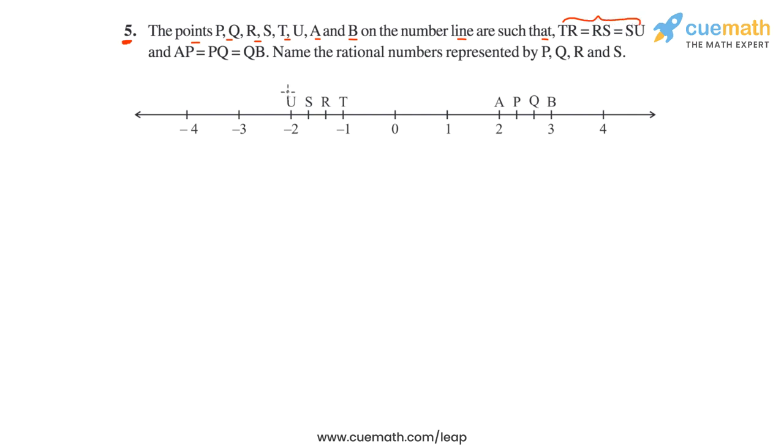If you observe the number line figure, we are told that TR equals RS equals SU. And then we are told that AP is equal to PQ is equal to QB. So in this part of the number line, the three segments AP, PQ, and QB are also equal.